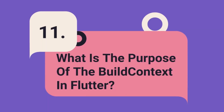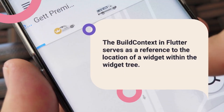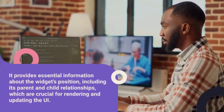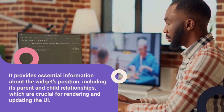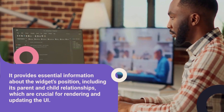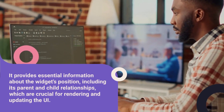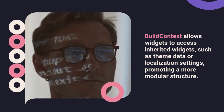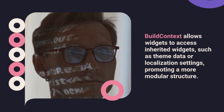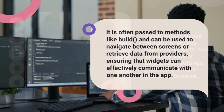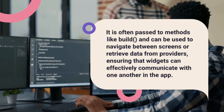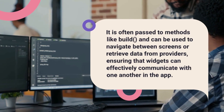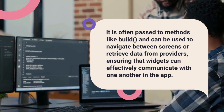Question 11: What is the purpose of the build context in Flutter? The build context serves as a reference to the location of a widget within the widget tree. It provides essential information about the widget's position, including its parent and child relationships, which are crucial for rendering and updating the UI. Build context allows widgets to access inherited widgets such as theme data or localization settings, promoting a more modular structure. It is often passed to methods like build and can be used to navigate between screens or retrieve data from providers, ensuring that widgets can effectively communicate with one another.